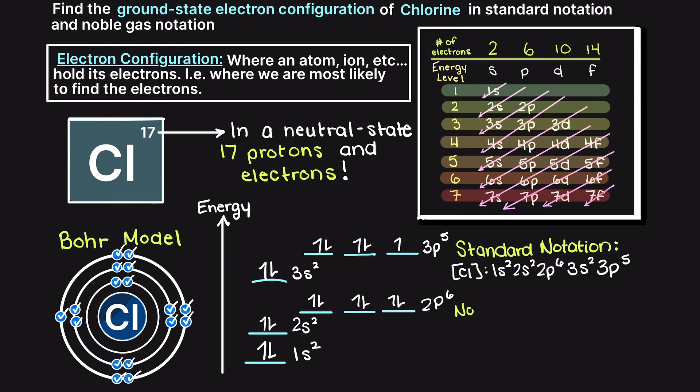Then let's write out our noble gas notation. For the noble gas notation we look at the next lowest noble gas, which is neon. Therefore we can consolidate this portion of our standard notation and write the chlorine electron configuration as neon 3s2, 3p5. And there we go, we have this solved for chlorine's ground state electron configuration in both the standard and noble gas notation.